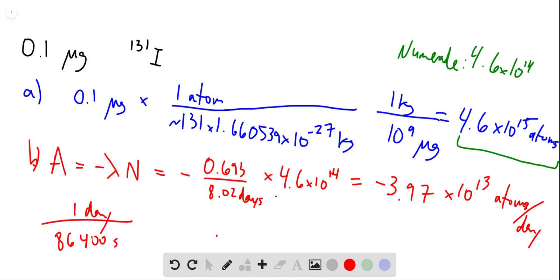And so A is minus 4.6 times 10 to the 8 atoms per second. And if you had kept 10 to the 15, you would have 10 to the 9 here, which would be my answer to this problem.